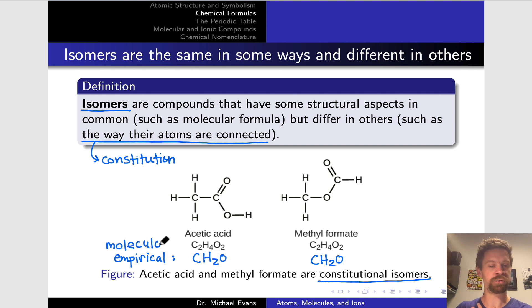However, if we look at the structural formulas for these compounds, it's very clear they're not the same thing. Their atoms are not connected in the same way. For example, this oxygen is connected to hydrogen in acetic acid, whereas the corresponding oxygen in methylformate is connected to carbons. That difference in connectivity leads to differences in properties.